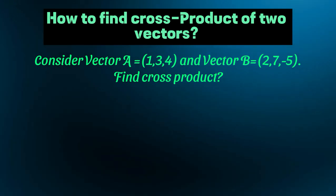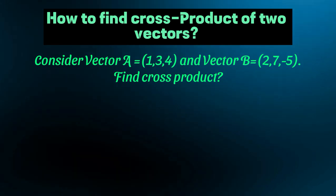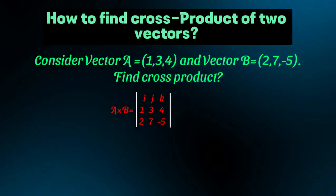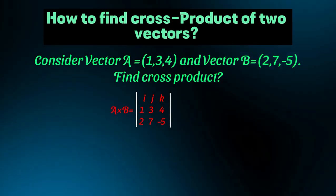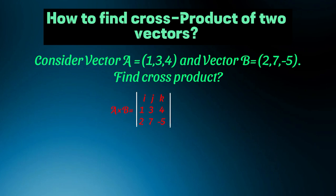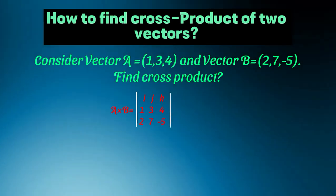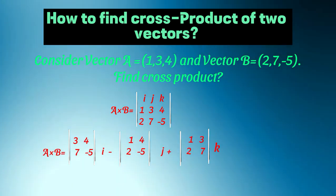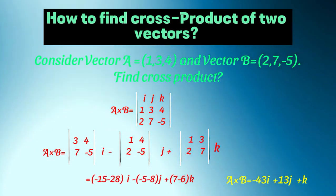Now we use operation of matrix to solve this. We consider the matrix of 3 by 3 order, in which i, j, k will be in 1st row, then in 2nd row we'll use the components of 1st vector, and in 3rd row we'll use components of 2nd vector. Now we'll find the determinant of this matrix. After solving we'll get the answer.